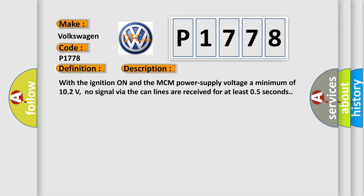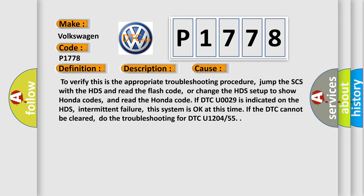This diagnostic error occurs most often in these cases. To verify this is the appropriate troubleshooting procedure, jump the SCS with the HDS and read the flash code, or change the HDS setup to show Honda codes and read the Honda code. If DTC U0029 is indicated on the HDS, intermittent failure, this system is okay at this time. If the DTC cannot be cleared, do the troubleshooting for DTC U1204 or 55.